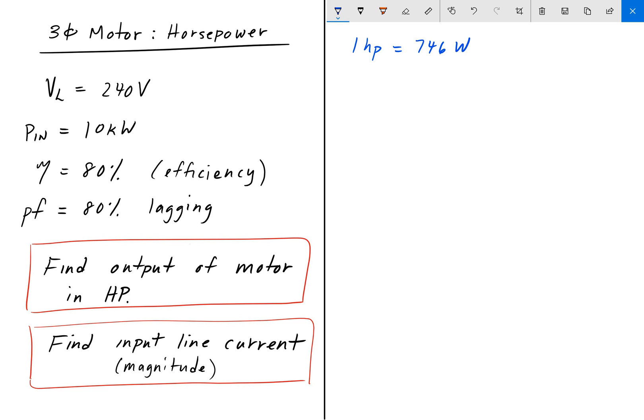One horsepower equals roughly 746 watts. And so what we want to do is we want to find the output power of this motor, or sometimes called the rated power. And the way we would do that is we need the definition of efficiency in terms of power. So efficiency is equal to power out divided by power in, right? So the relationship between the output power and the input power.